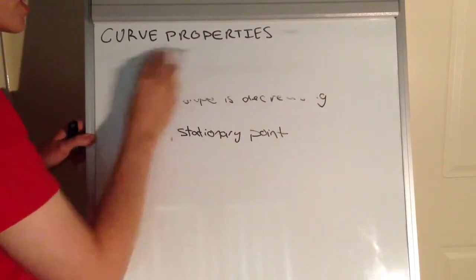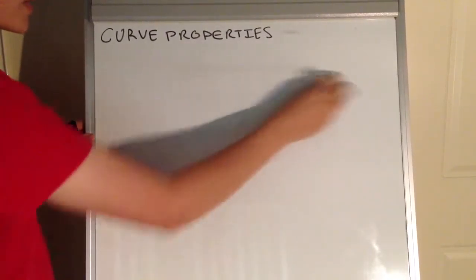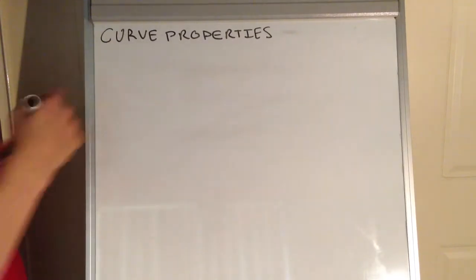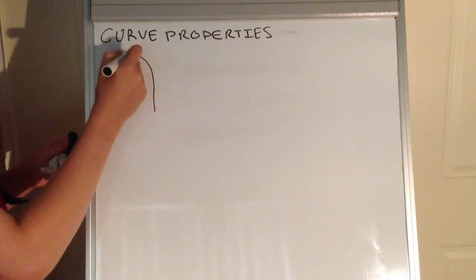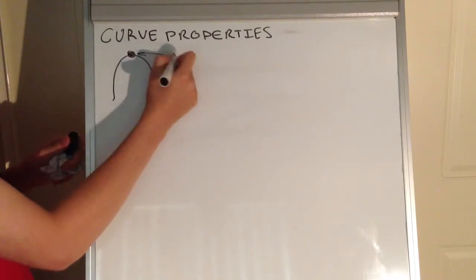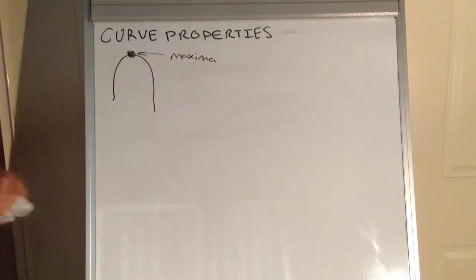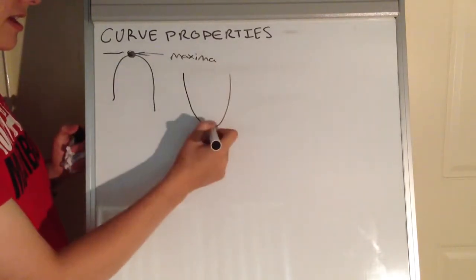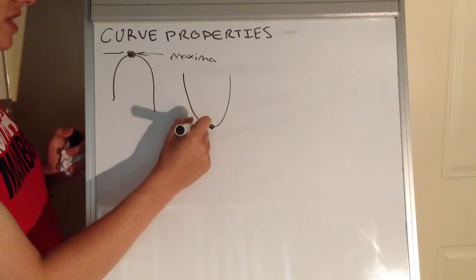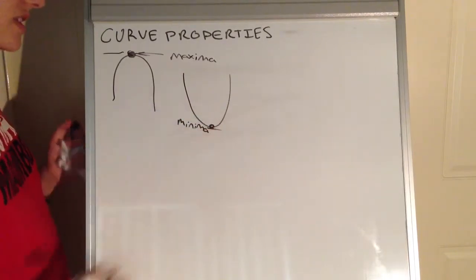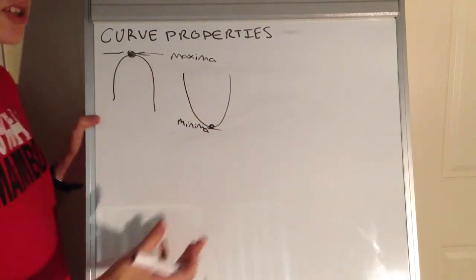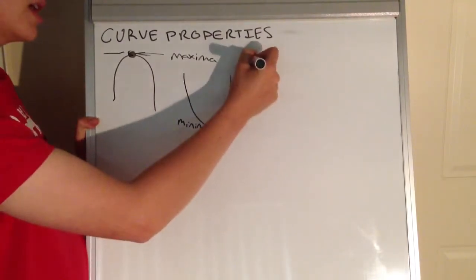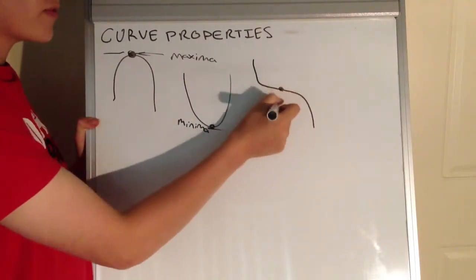Let's go through stationary points with a couple of examples. If we had a quadratic, then that would obviously be a maxima, and the derivative — the slope of the tangent line — would of course be zero at that point. It would be a flat line — no change in y, no change in x. Then we have a minima, for example. That's another stationary point. There's no rate of change.